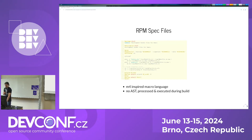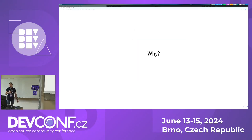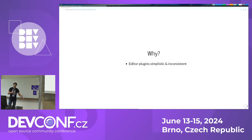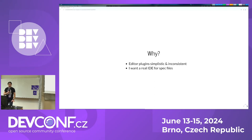Now you might ask yourself, why do you want to do this anyway? If I open a spec file in my editor, I get syntax highlighting, get some error messages popped up by RPM lint. But in my humble opinion, most of the editor plugins I have seen are relatively simplistic, and the user experience across different editors is very inconsistent. If you open your spec file in standard Emacs, you get no syntax highlighting. You get some in VI. In VS Code you have to install an extension. As someone who has to futz a lot with spec files, I want a real IDE.